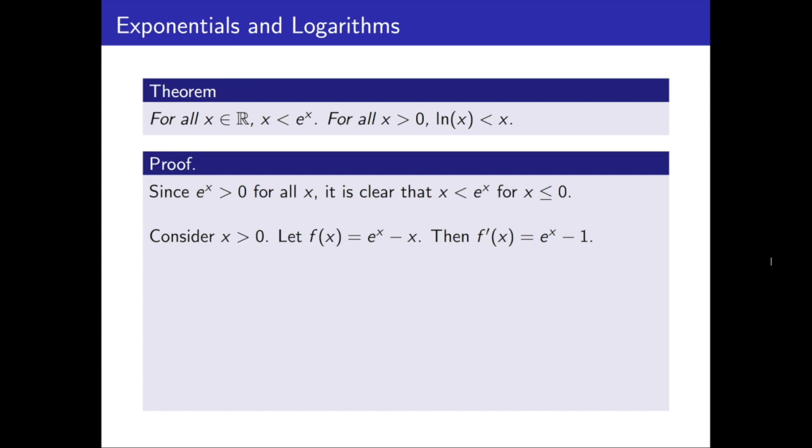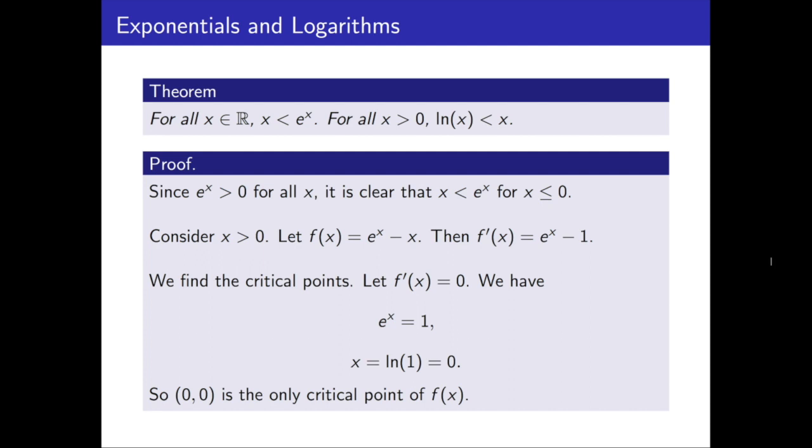So we'll take the derivative of this function. We get e to the power x minus 1. Now we would like to find the critical points of it. So we'll set that derivative equal to 0. That gives us e to the power x equals 1, which means x is the natural log of 1, or in other words, 0.